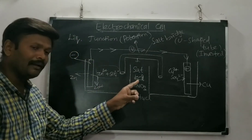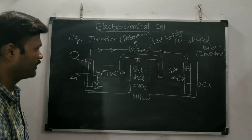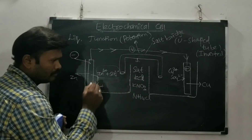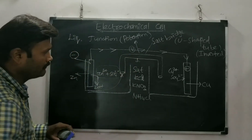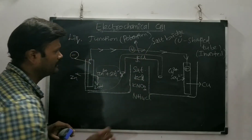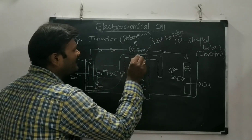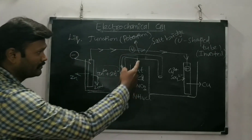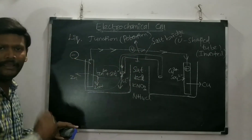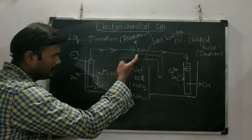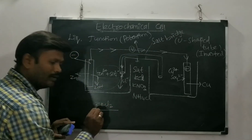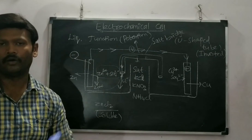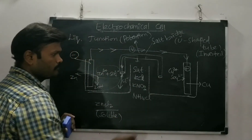Now, the Zn²⁺ ions create a positive charge in the anodic solution. The Cl⁻ ions from the KCl salt bridge will flow into the anodic solution to maintain neutrality, forming ZnCl₂ which is completely soluble in water and also produces ions — that is why it is called inert. On the cathodic side, SO₄²⁻ ions are in excess, and K⁺ ions from the salt bridge automatically flow into that solution to form K₂SO₄, which is also water-soluble.